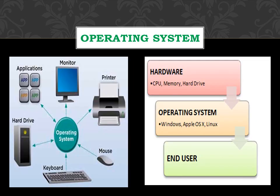The operating system handles both hardware and applications. In the image, hardware includes the monitor, printer, mouse, keyboard, and hard drive. Different types of applications, like LP7 school applications, Microsoft Word, and all other applications, are handled by the operating system. The operating system is a middleman between the user and hardware.